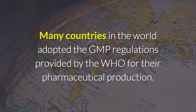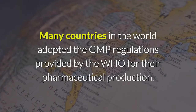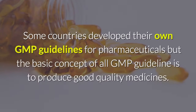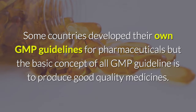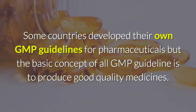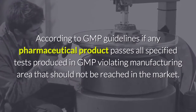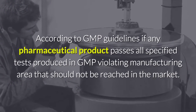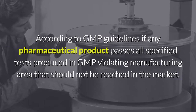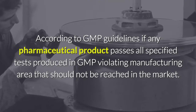Many countries in the world adopted the GMP regulations provided by the WHO for their pharmaceutical production. Some countries developed their own GMP guidelines for pharmaceuticals, but the basic concept of all GMP guidelines is to produce good quality medicines. According to GMP guidelines, if any pharmaceutical product passes all specified tests but was produced in a GMP-violating manufacturing area, it should not be released to the market.